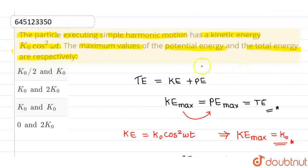So, what we have to find out? We have to find out maximum value of potential energy and the total energy. So, this will be k0 and k0. Option 3 is correct and rest all options are incorrect. I hope you understood. Thank you.